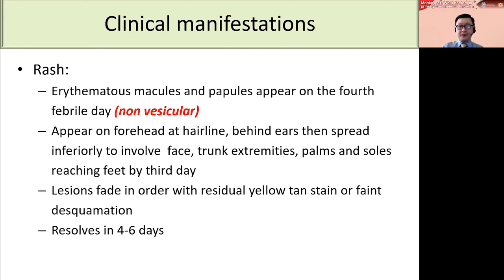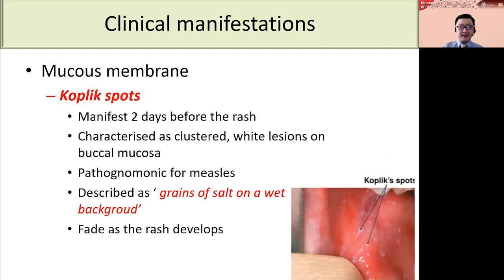The rash seen in measles is typically erythematous macules and papules that appear on day four of febrile illness. The lesion is non-vesicular, which is a very important clue to differentiate measles from other vesicular conditions like monkeypox, chickenpox, and hand, foot, and mouth disease. The rash typically appears on the forehead at the hairline and behind the ears, then spreads inferiorly to the face, trunk, extremities, palms, and soles, reaching the feet by day three of the lesion. The lesion fades in order with residual yellow-tan staining and faint desquamation. Koplik spots are a pathognomonic lesion seen during the prodromal period, appearing around two days before the rash — characterized as cluster white lesions on the buccal mucosa, sometimes described as grains of salt on a wet background — and they fade as the rash appears.